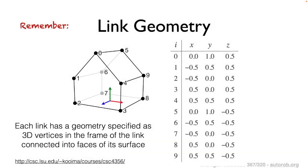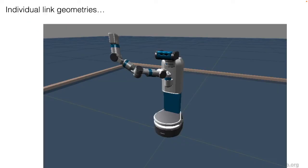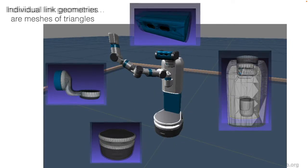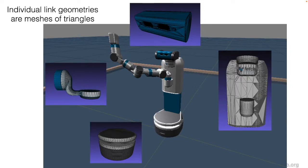To implement this, we first recall how links are defined and represented within our Knievel stencil. Each geometry is associated with one particular link, where the geometry is defined as a set of 3D vertices for that link and also the triangular faces that connect those vertices to form the actual surface. As a result of that representation, we have a set of individual link geometries for each part of our robot. These individual link geometries ultimately are represented as a mesh that collects a set of triangles, which we visualize as the surface of each part of the robot.